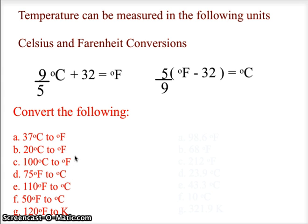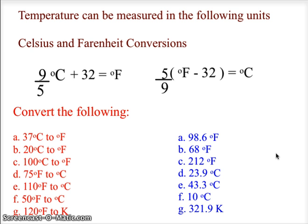On the PDF you have sample problems converting Celsius to Fahrenheit and back. The answers: 37°C is 98.6°F; 20°C is 68°F; 100°C is 212°F; 75°F is 23.9°C; 110°F is 43.3°C; 50°F is 10°C. As a mixed problem, 120°F must first be converted to Celsius, then add 273 to get 321.9 Kelvin.